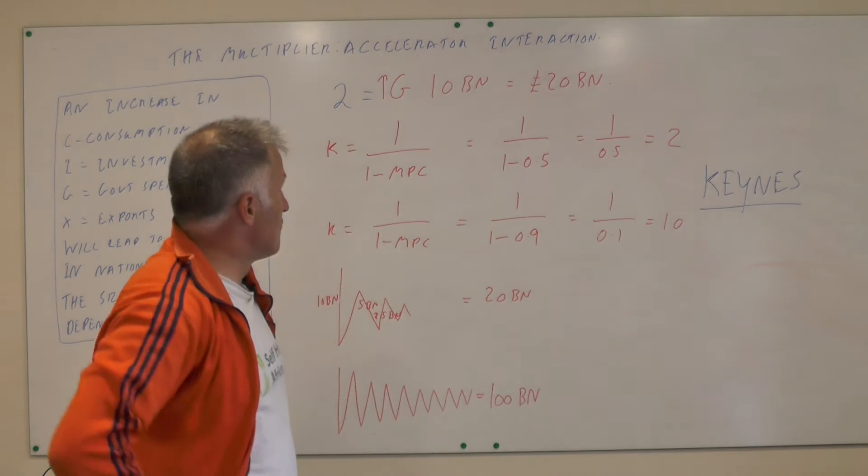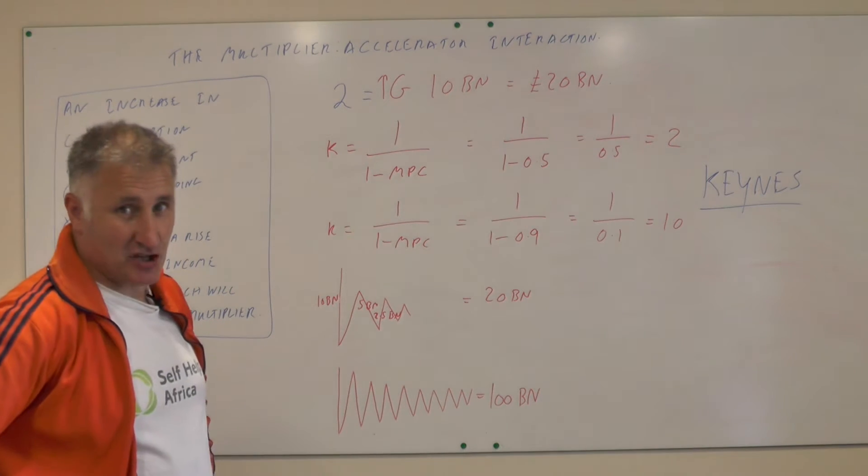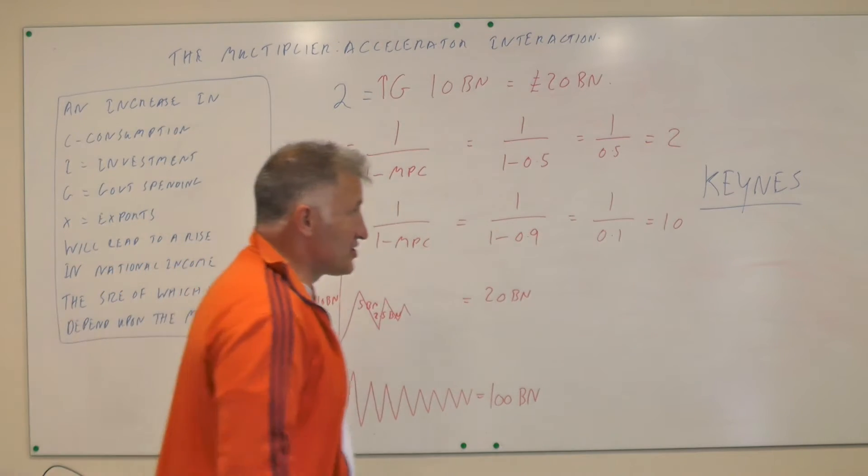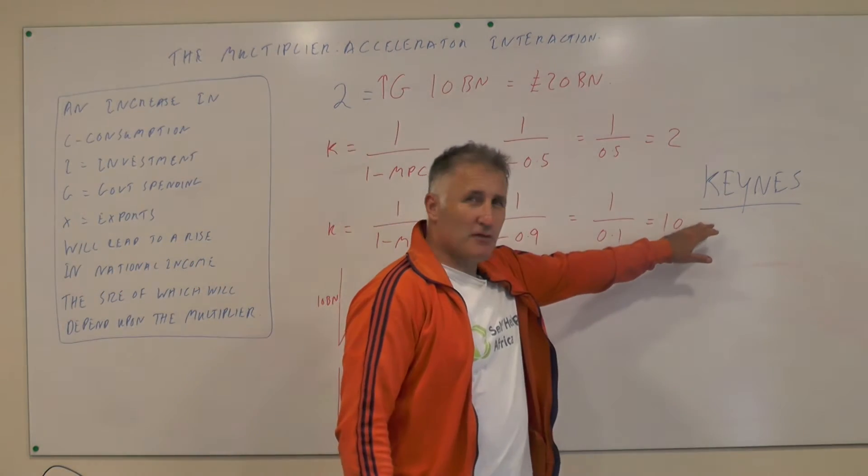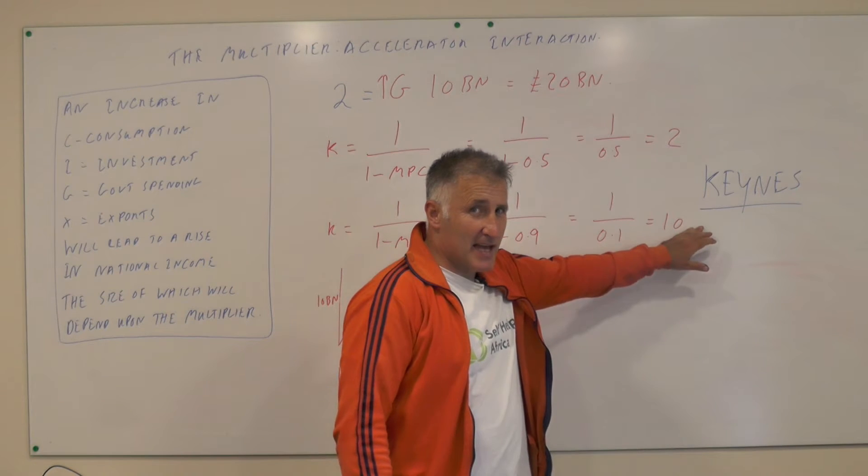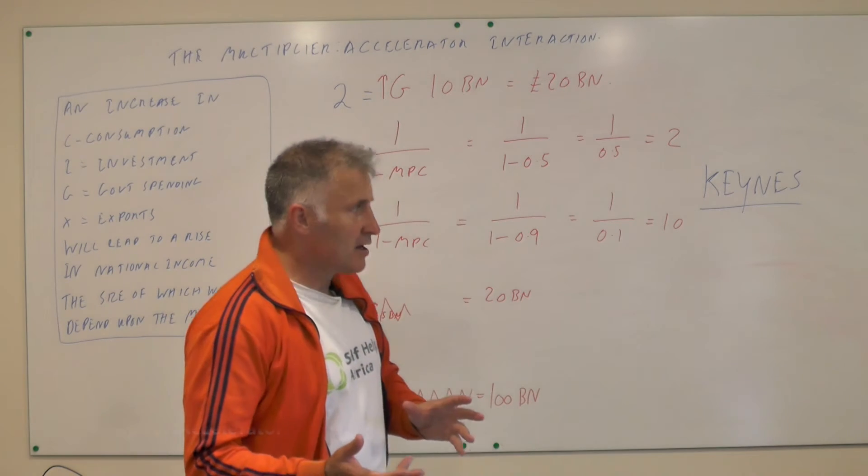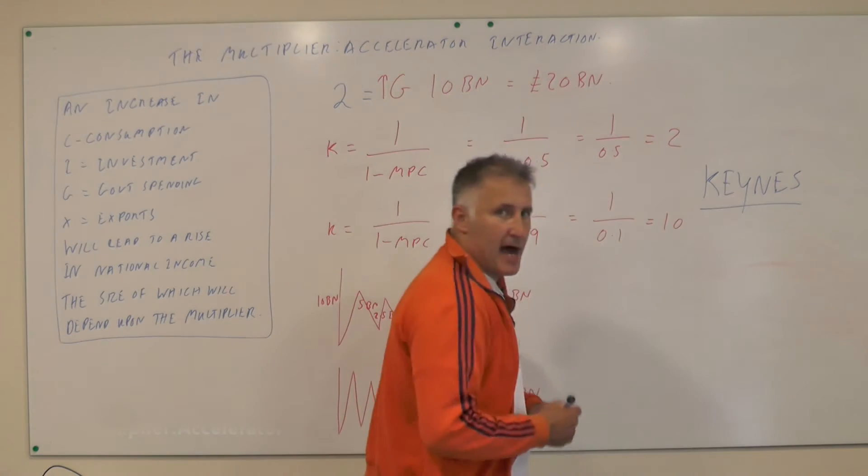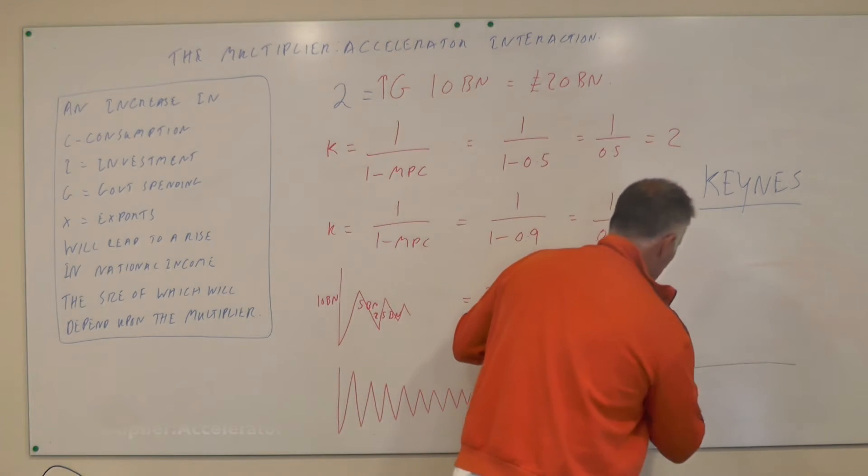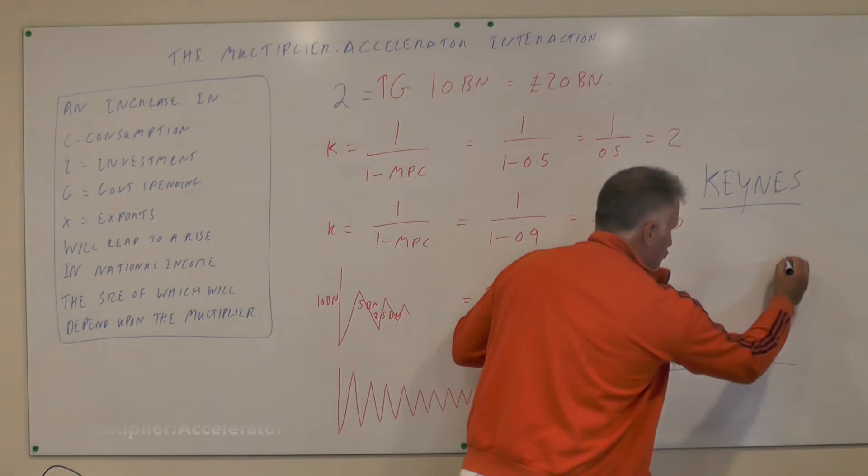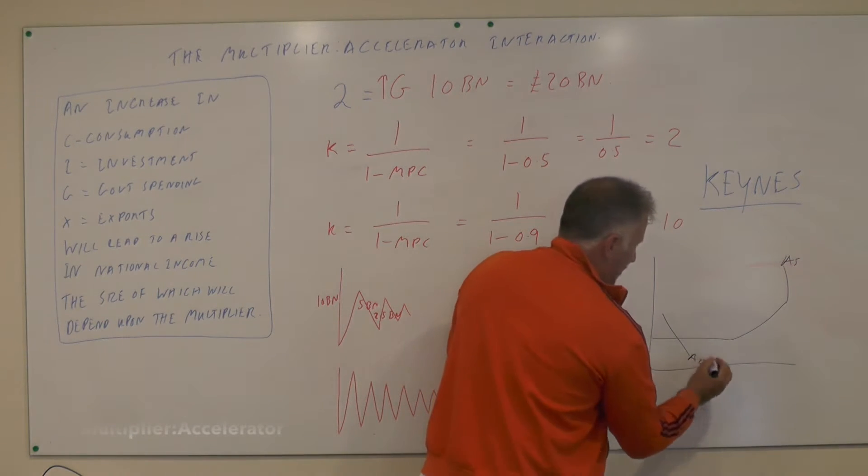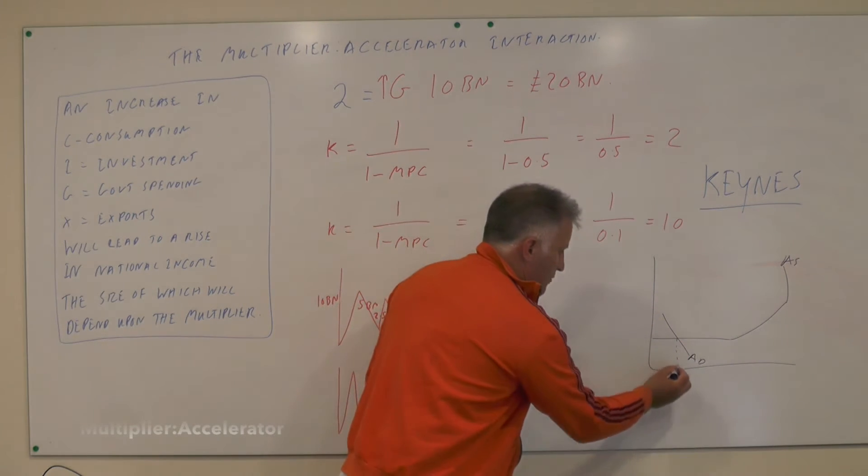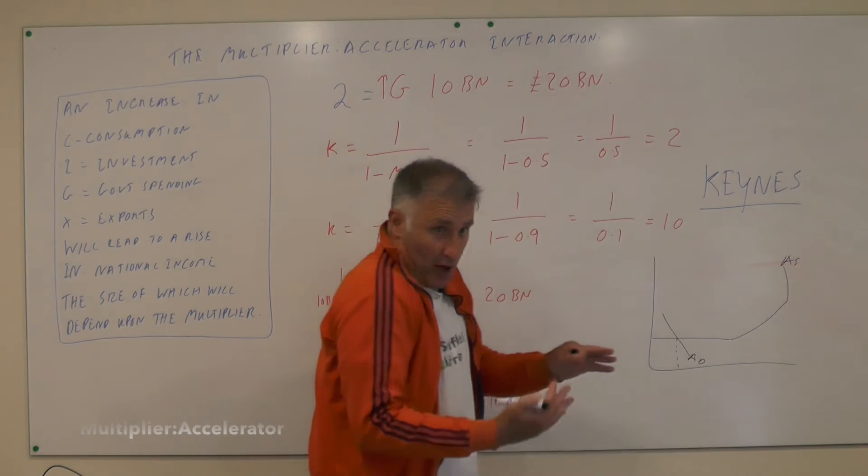This is the multiplier-accelerator interaction, and this is really important. In the 1930s, if you remember from lesson 51, I was talking about Keynes and his idea that in a recession we should increase AD because we could get stuck. We draw an AS curve out here and this is AD down here. We could get stuck all the way down here, which would be pretty crazy.